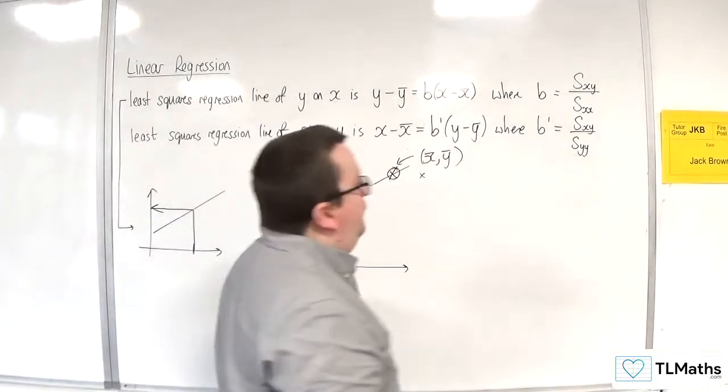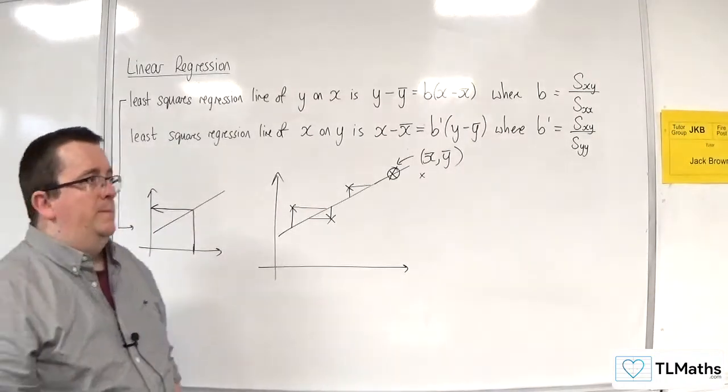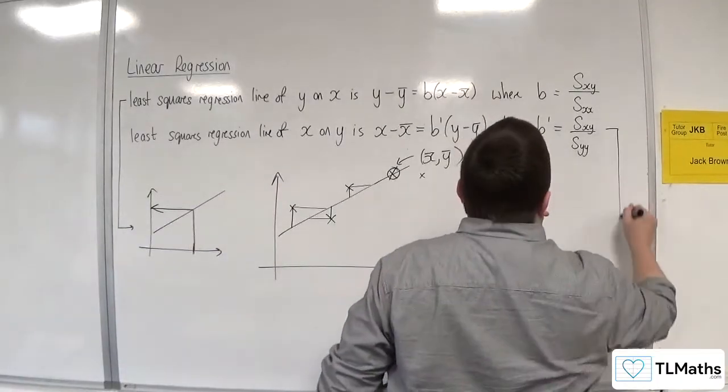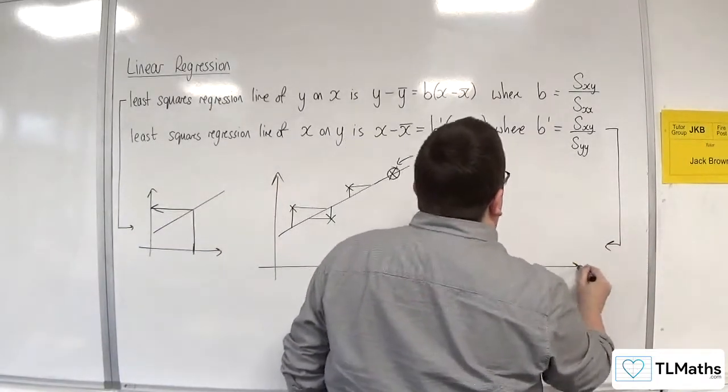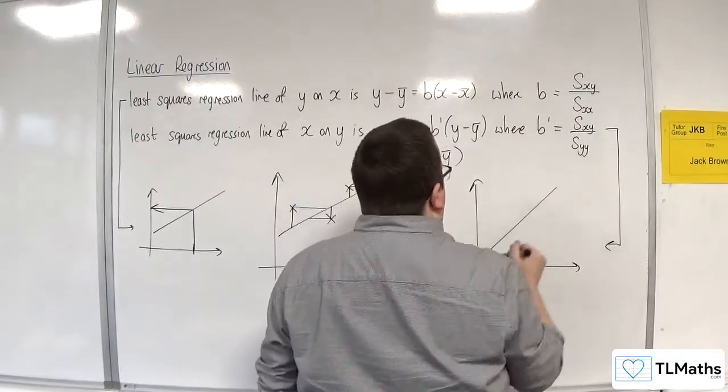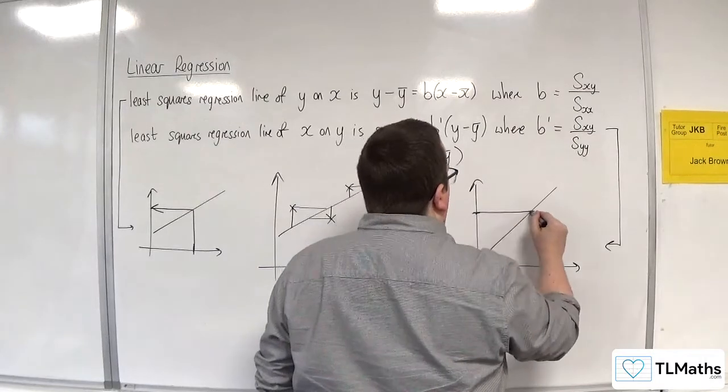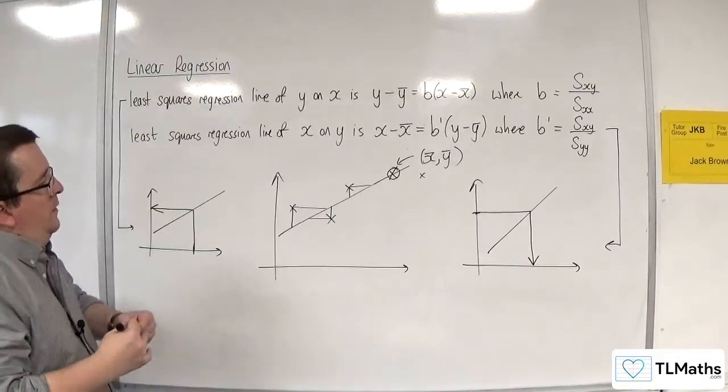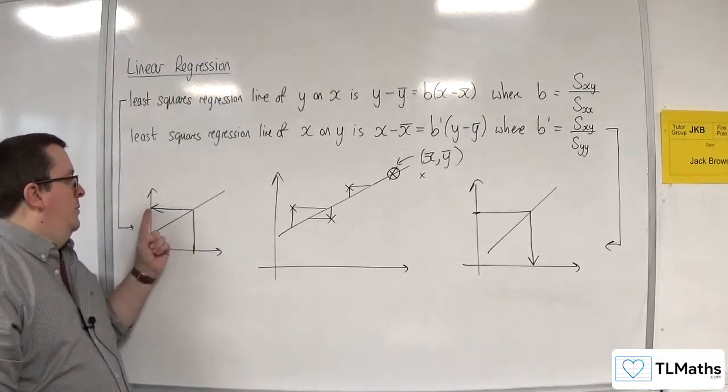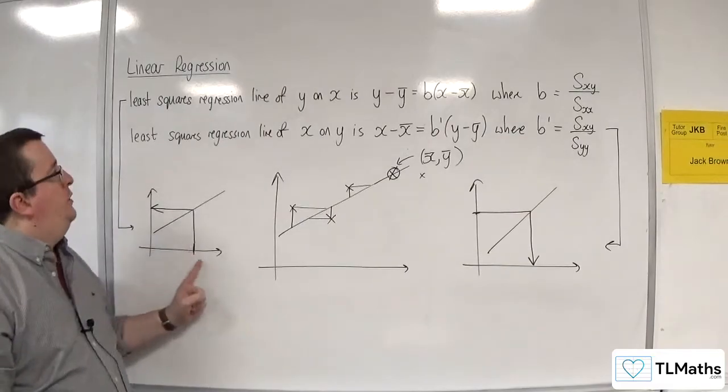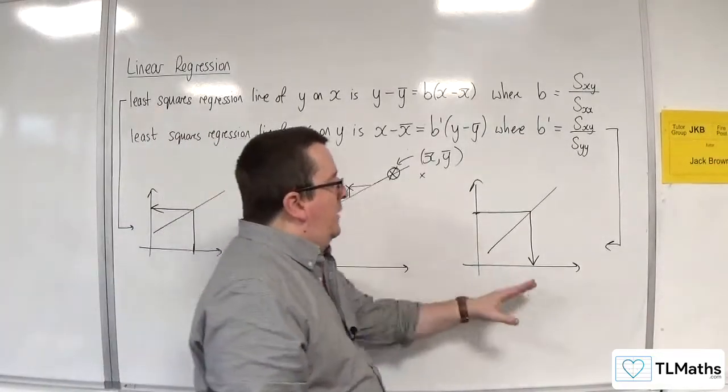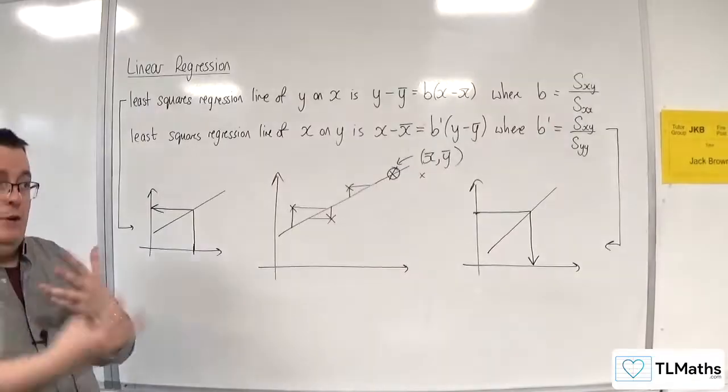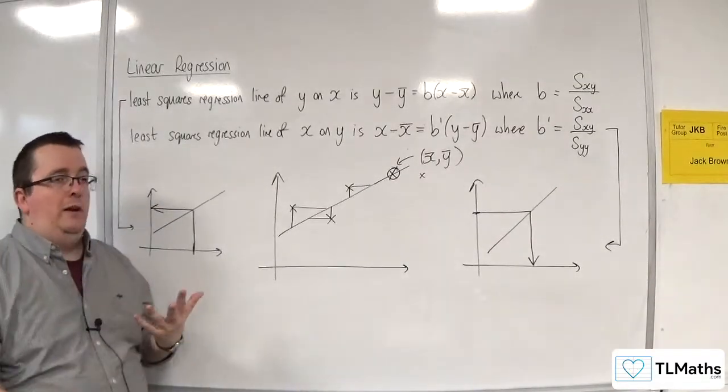Whereas if you have random on random, you might want to use the x on y regression line where you have a y value and want to predict the x value. If you want the y value based on an x value, use y on x. If you want the x value given a y value, use x on y. That tells you which of the two lines you need to calculate.